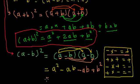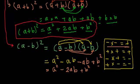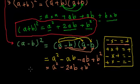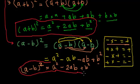Solving further: a² stays as it is. Minus ab and minus ab are two negative ab's, giving minus 2ab. And then we have plus b². So (a-b)² = a² - 2ab + b².